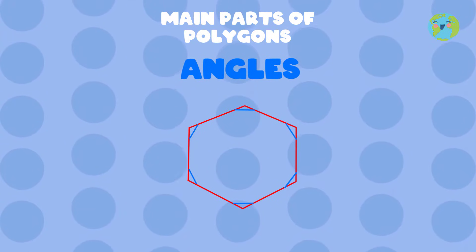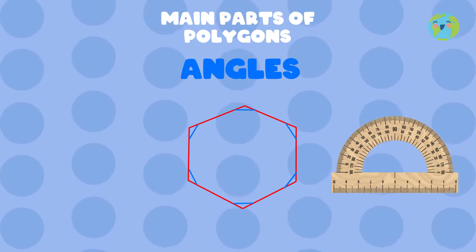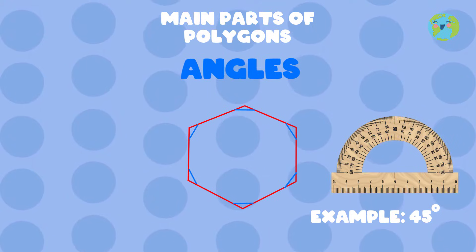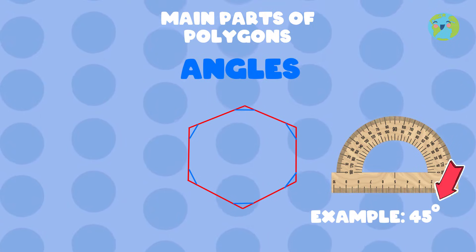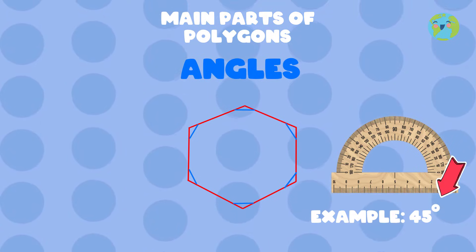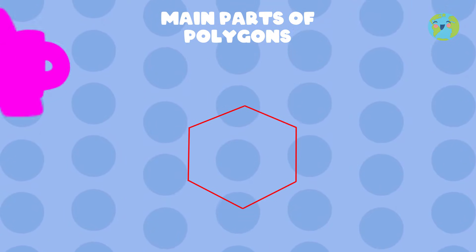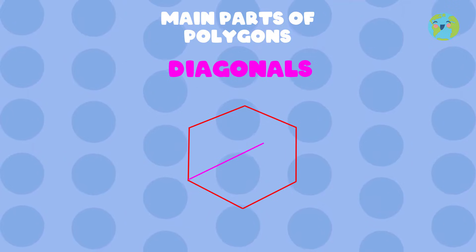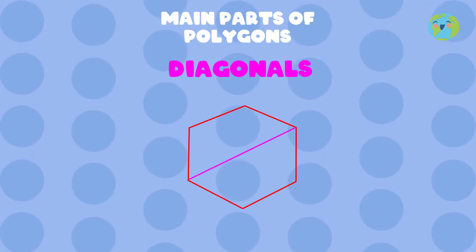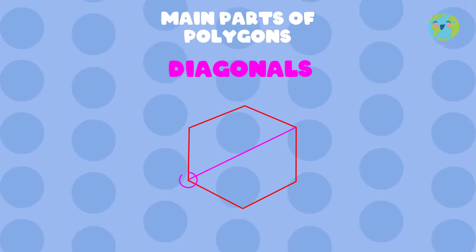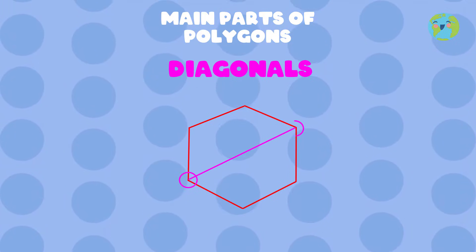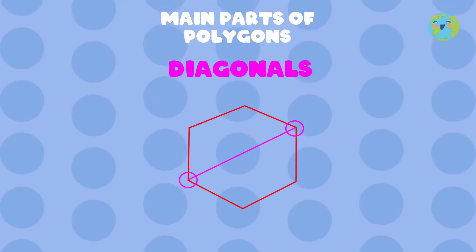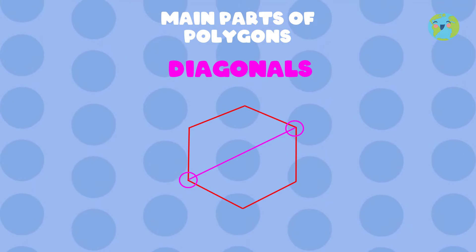Angles are measured with the protractor and are calculated in degrees. And the diagonals are segments of the polygon that join a vertex with its opposite vertex, like this.